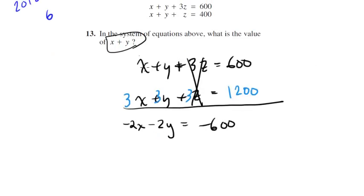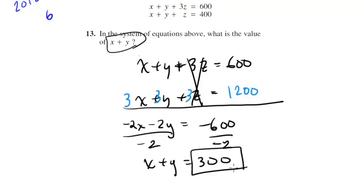Notice now I want to just get x plus y, so I'll divide both sides by negative 2, and I get x plus y is equal to 300, and that's your answer. So you would go ahead and grid that into the answer sheet.